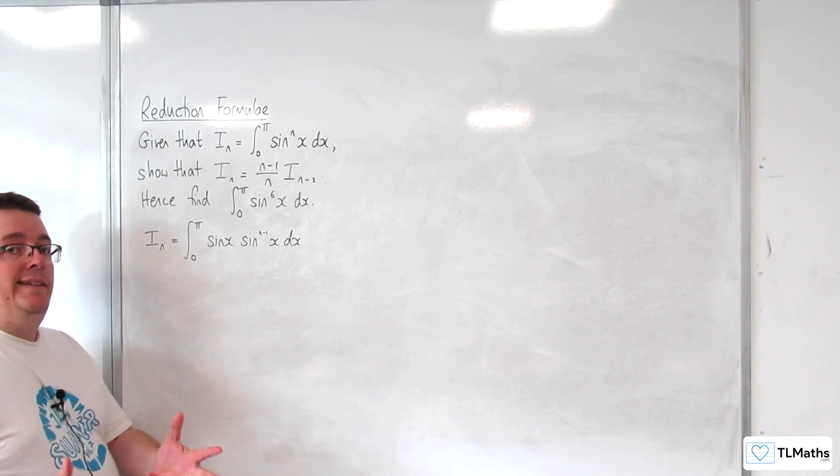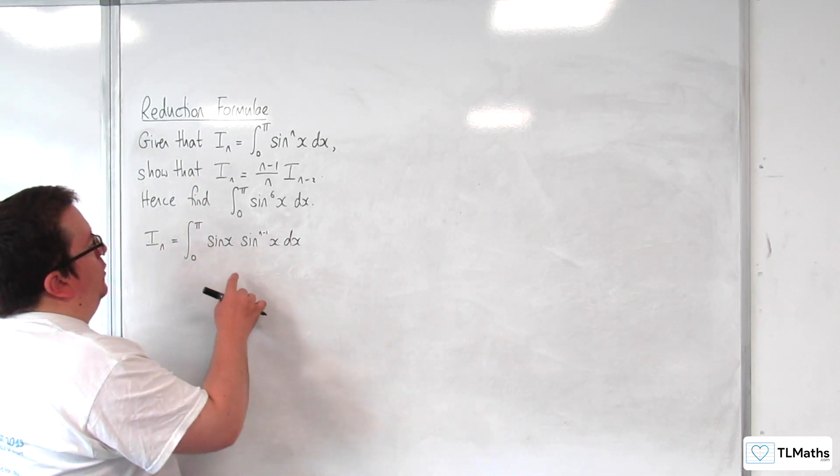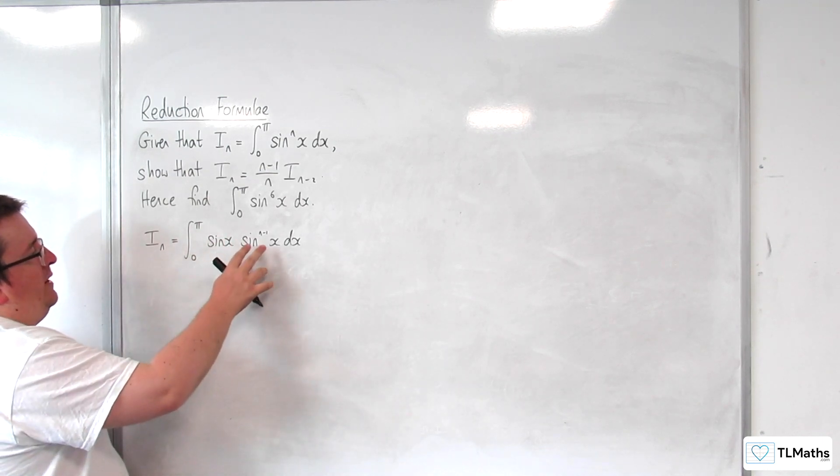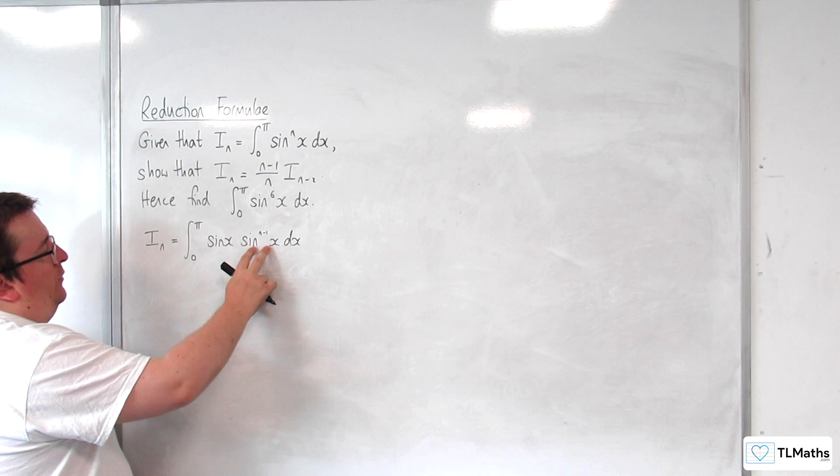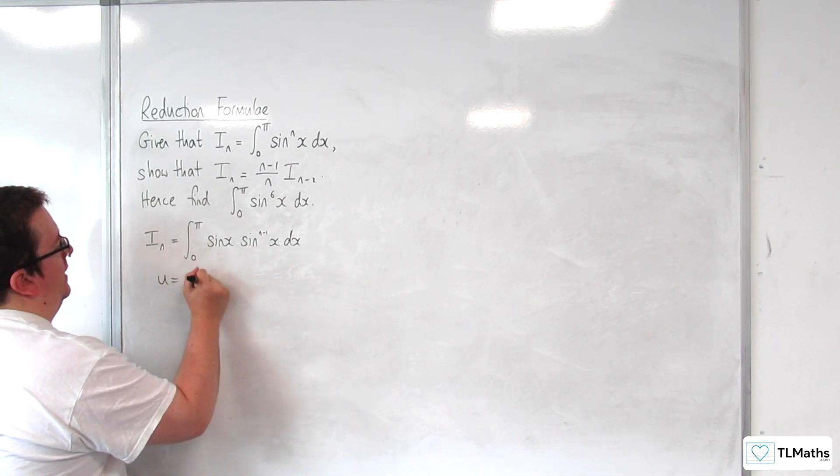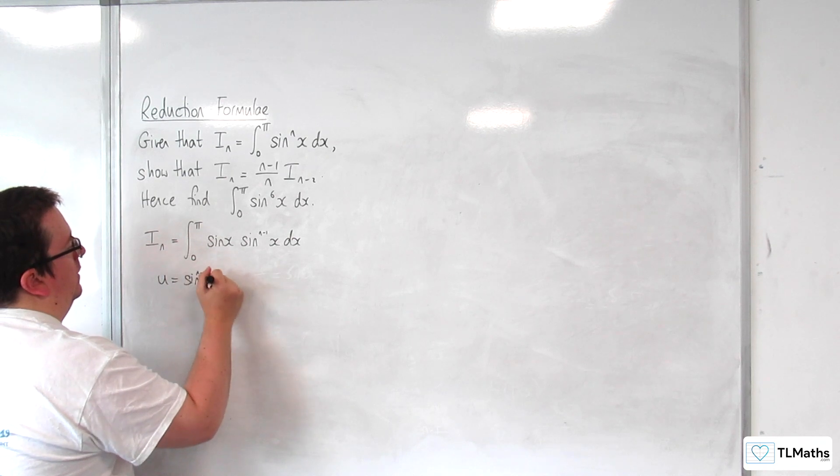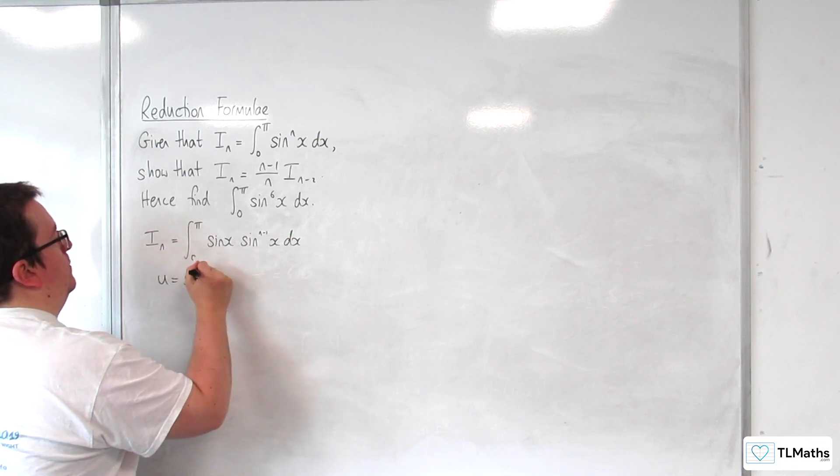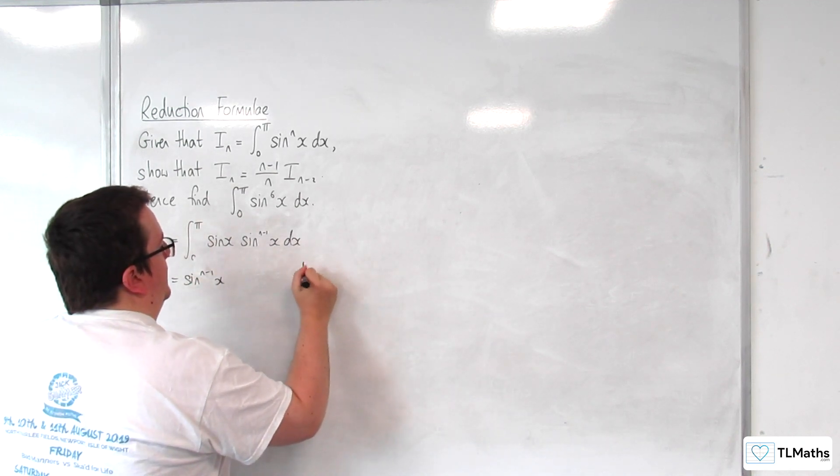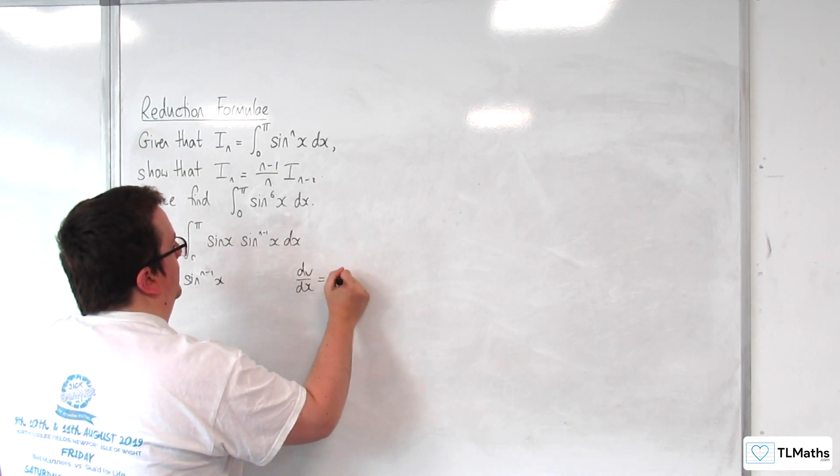Now remember, u we need to differentiate. We can differentiate either of them fine, but integrating this one's going to be a problem. So we'll choose u to be sin^(n-1)(x), and we'll have dv/dx to be sin(x).